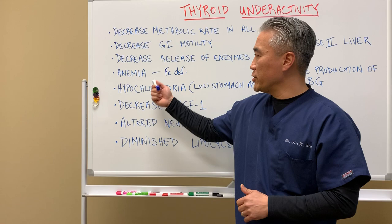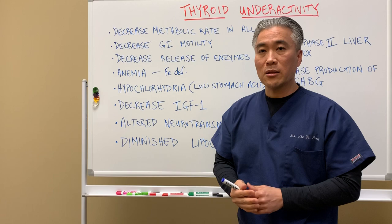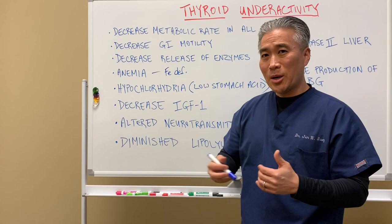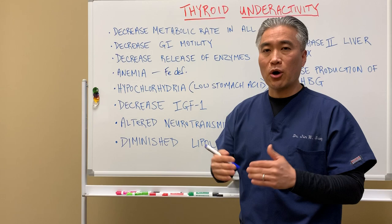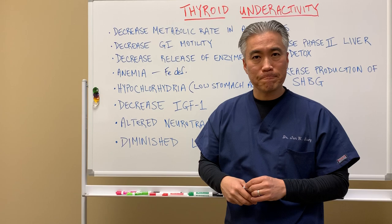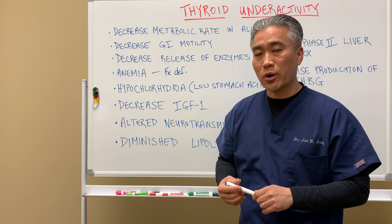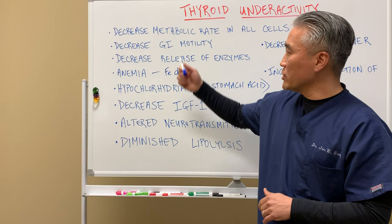Another anemia that can occur from malabsorption is megaloblastic anemia, resulting from deficiencies in B12 and B9. Additionally, pernicious anemia — an autoimmune disease where antibodies attack intrinsic factor in the stomach — can prevent proper B12 absorption, also leading to anemia.